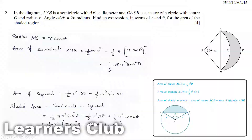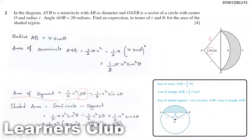To find the area of the segment, we use the sector formula ½R²θ, but our angle is 2 theta, so it becomes ½R²(2θ). Then we subtract the triangle area: ½R²sin(2θ), again replacing theta with 2 theta. This gives the area of the segment.